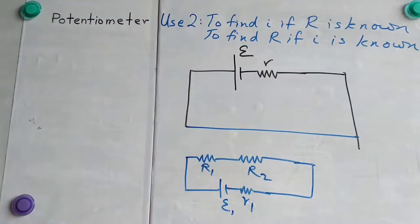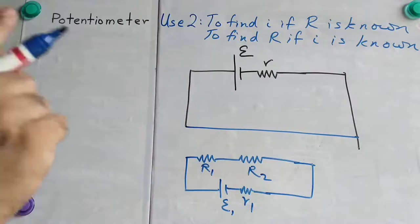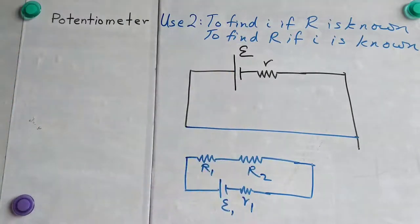First, we want to find the current. We know R1. We want to find the current in this circuit exactly. A potentiometer will give us the exact value of current.